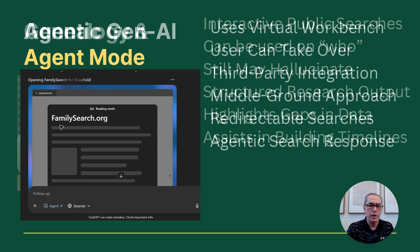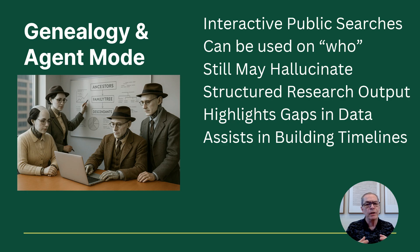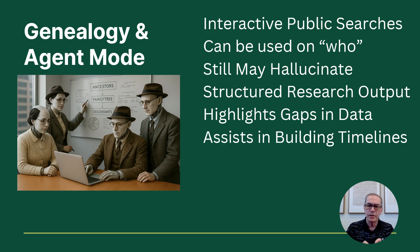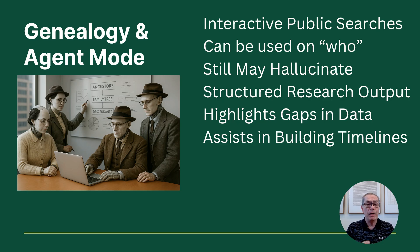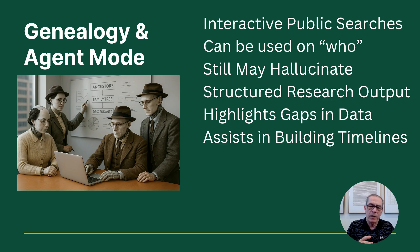In agent mode, for genealogists, it's interactive public searches. There are ways to integrate with FamilySearch that can get past some of the password barriers, but it's very difficult to do and doesn't work all the time. It sometimes gets stopped on 'are you a robot' screens, sometimes it doesn't. You still have to be very careful about hallucinations — not as bad as older versions, but if you're doing full research this is just guiding your path. It's structured, highlights gaps in data, and is really good at the how and the why. I'm going to use it on the who.